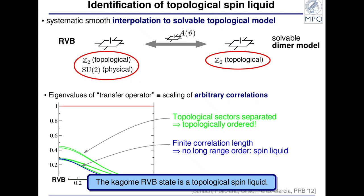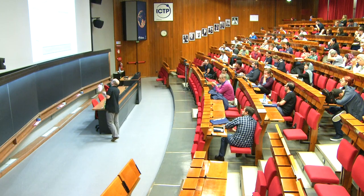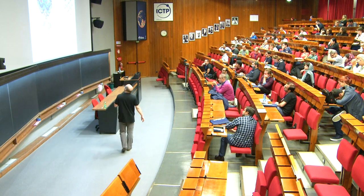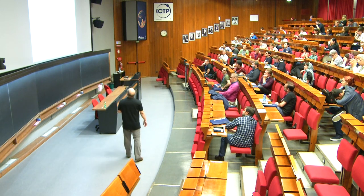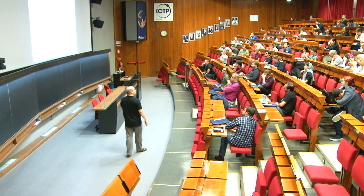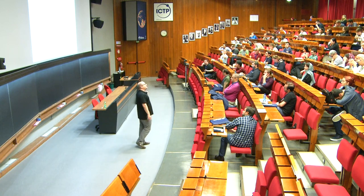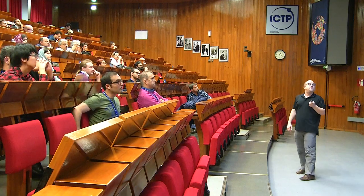In the last 10 minutes or so, let me switch topics slightly and talk about transitions between topological phases. Up to now, what I told you is that the symmetry is basically equivalent to having topological order in a system. But in fact it's slightly more subtle.